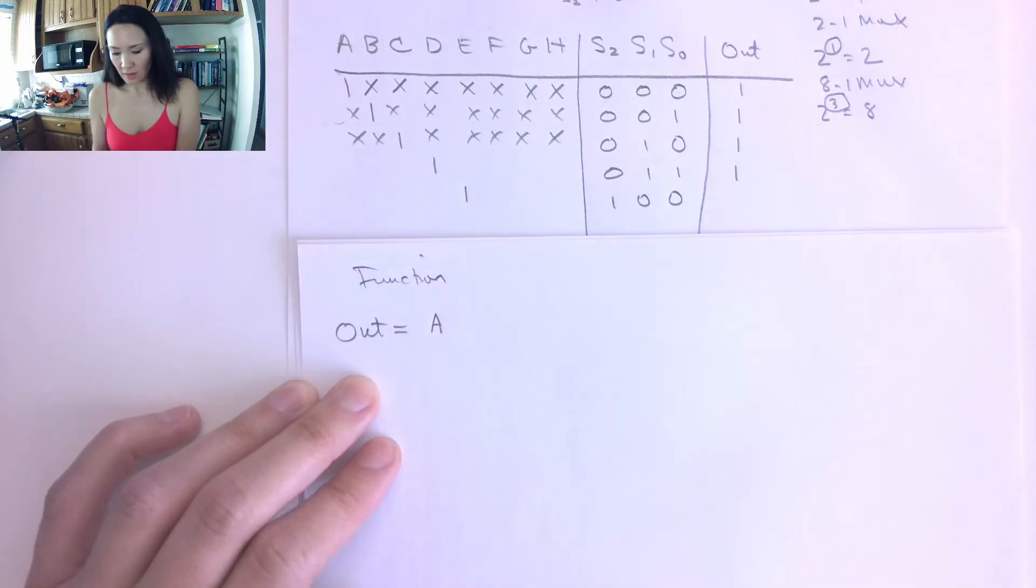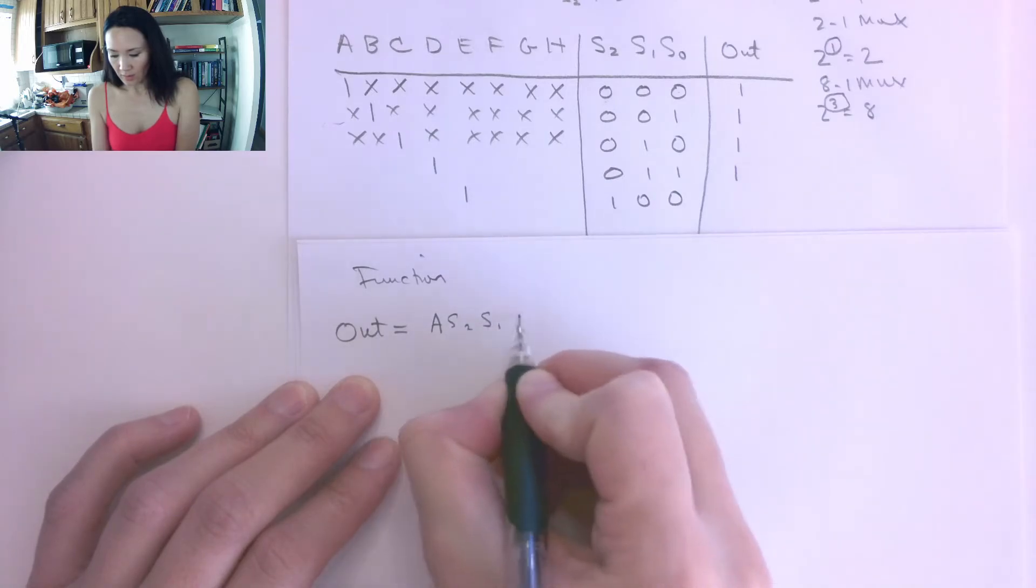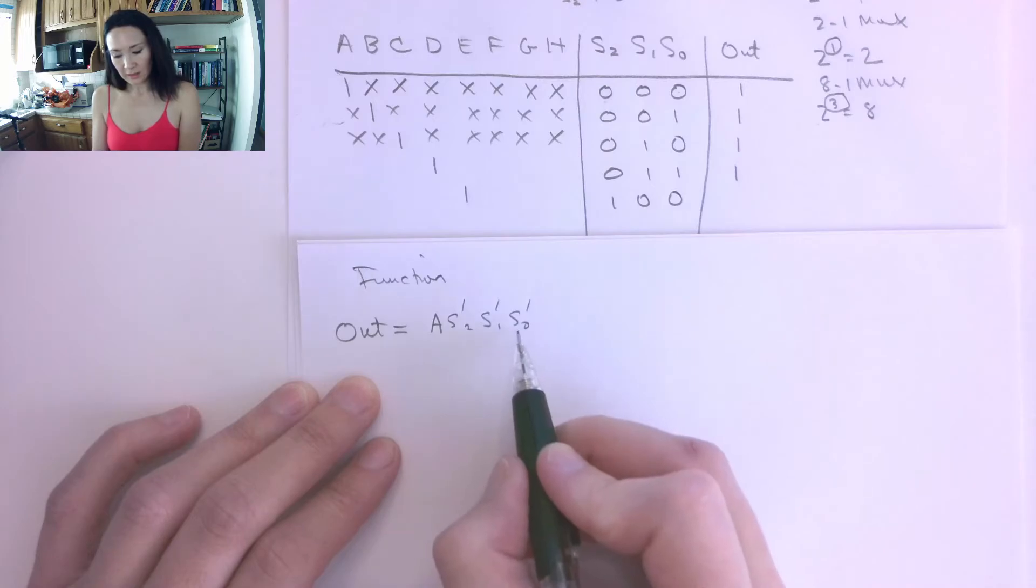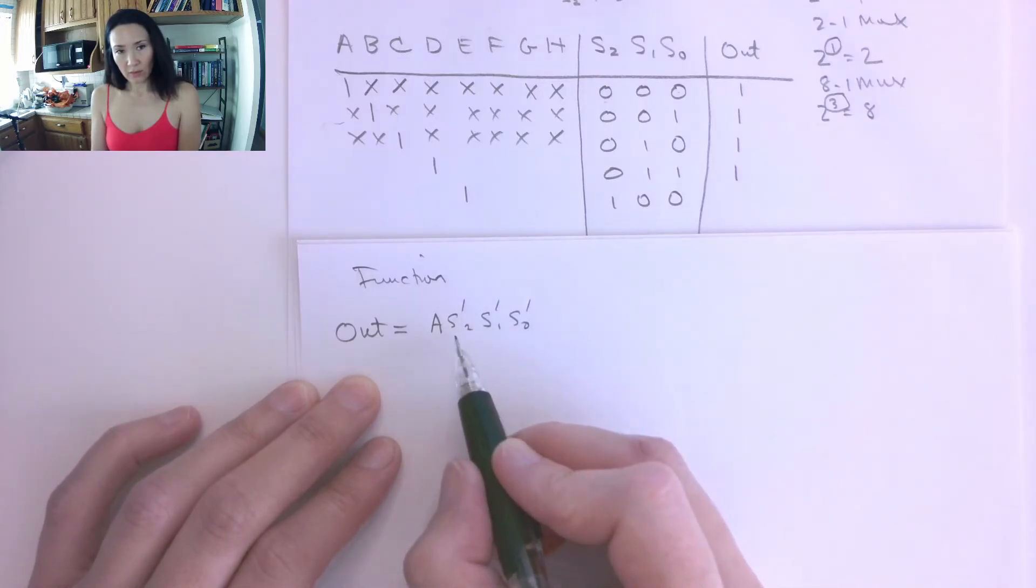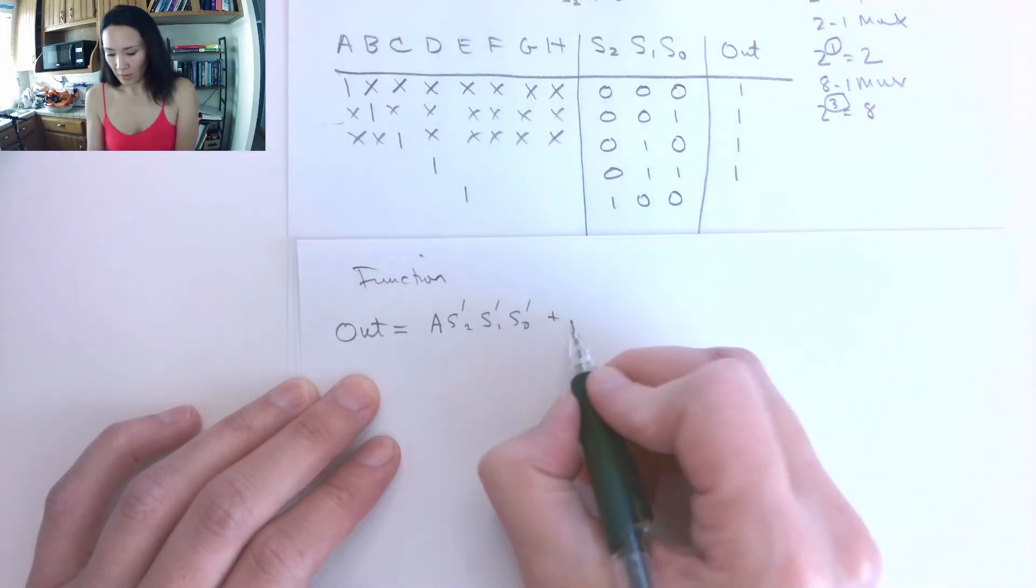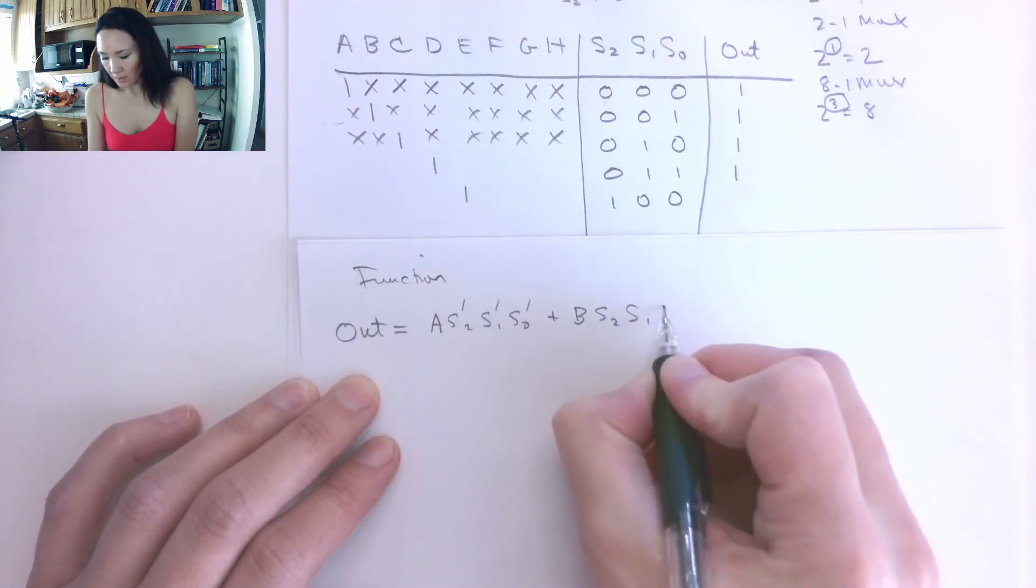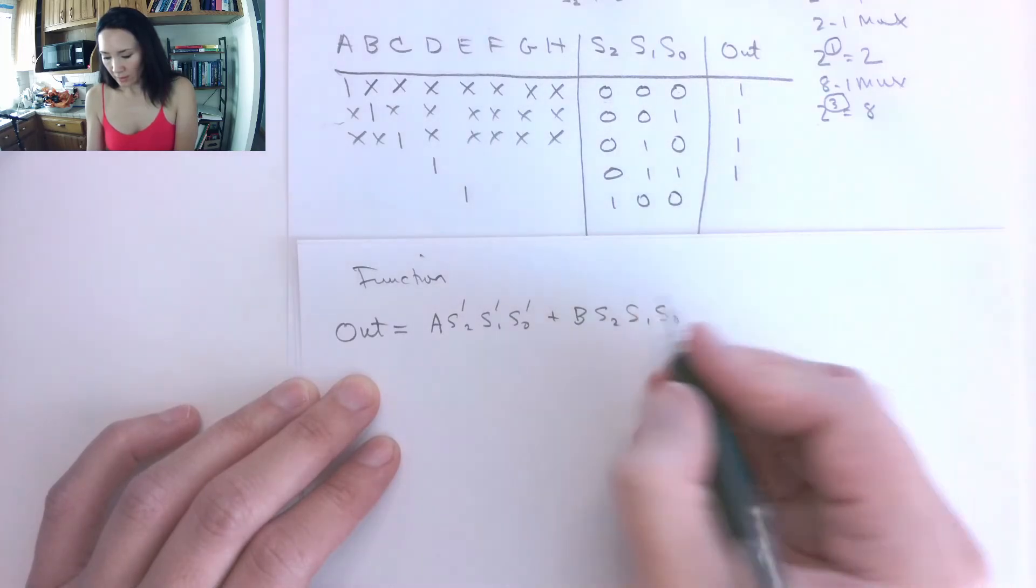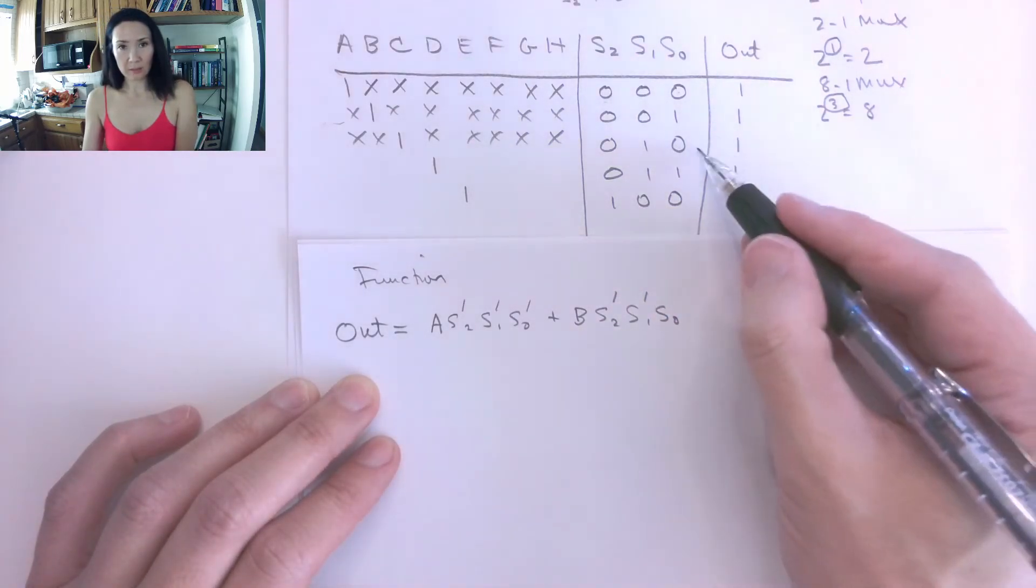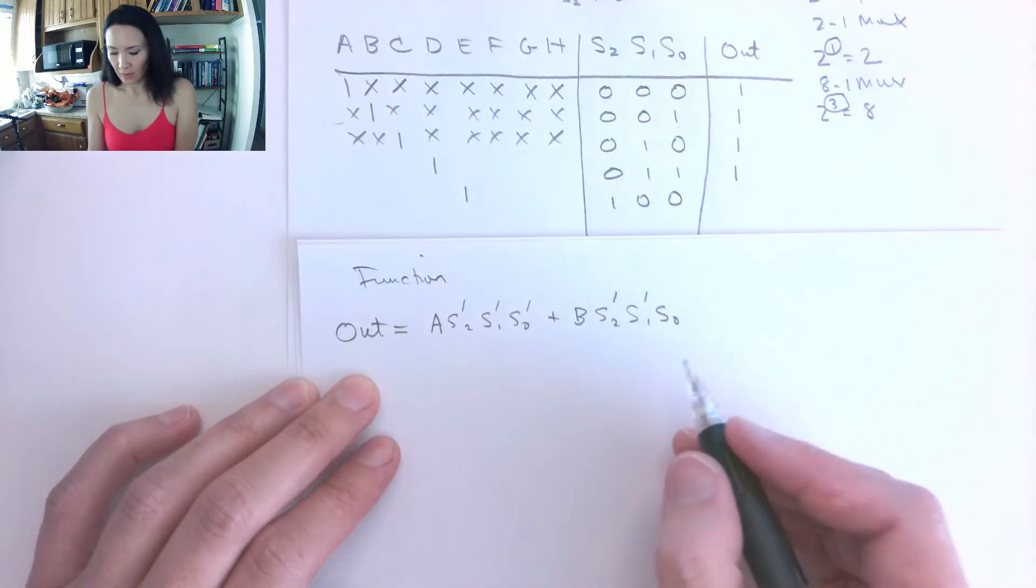So it looks like this. We have A not complemented, because it's a 1, and then we have S2, S1, S0, and these all get complements, because these need to all be 0 in order for this product term to be 1. Okay, great. So that's the first product term.